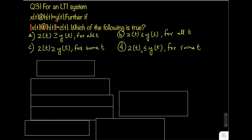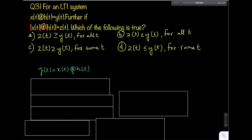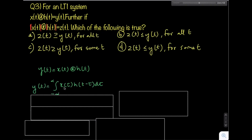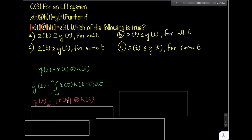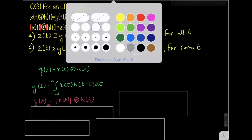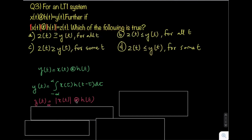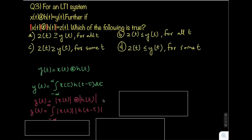The convolution expression for y(t) is: y(t) = ∫ from -∞ to ∞ of x(τ)·h(t-τ) dτ. Similarly, z(t) = |x(t)| convolved with |h(t)|, which gives z(t) = ∫ from -∞ to ∞ of |x(τ)|·|h(t-τ)| dτ.